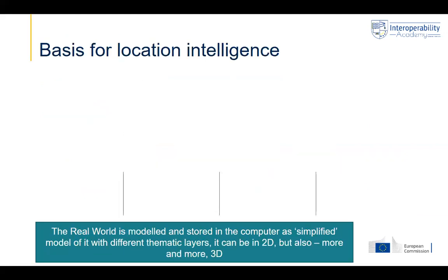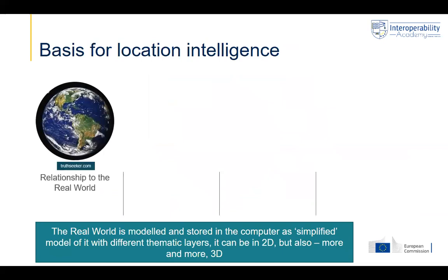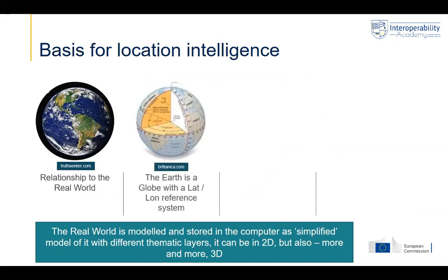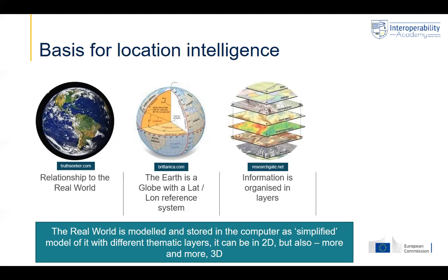What is specific about location data is that they are constructed to build location intelligence. We start from the real world and model it — storing it in the computer as a simplified model. We do this by referring to the Earth as a globe with a lat-long reference system, so we know for each location a coordinate in X, Y, and also Z values. We then organize all this information in the form of layers — for example, a layer on administrative boundaries, land use, soils, buildings — logically building datasets based on thematic fields and content.